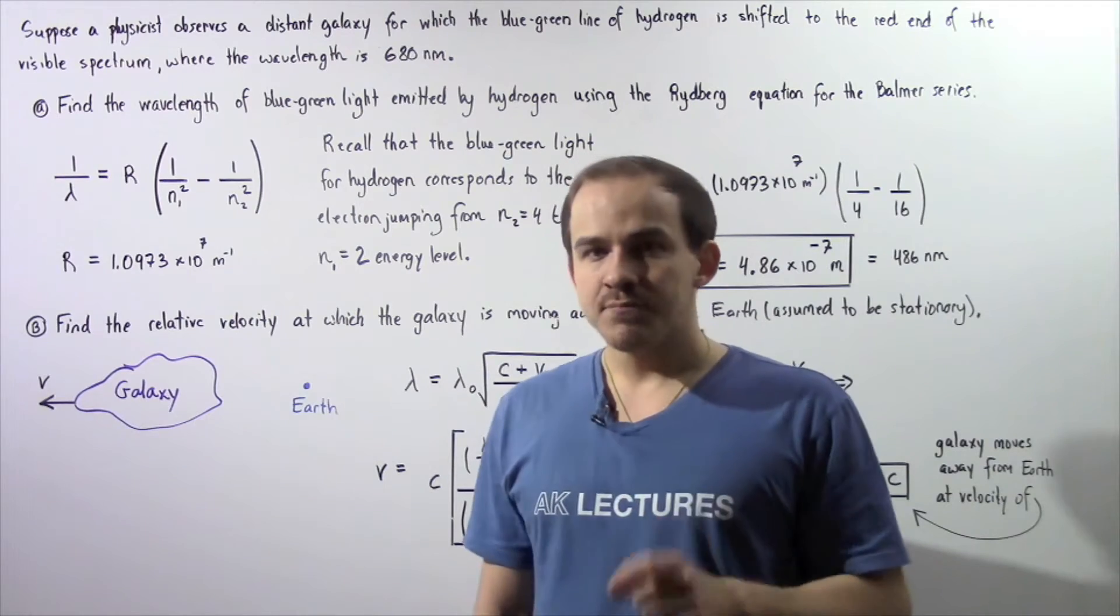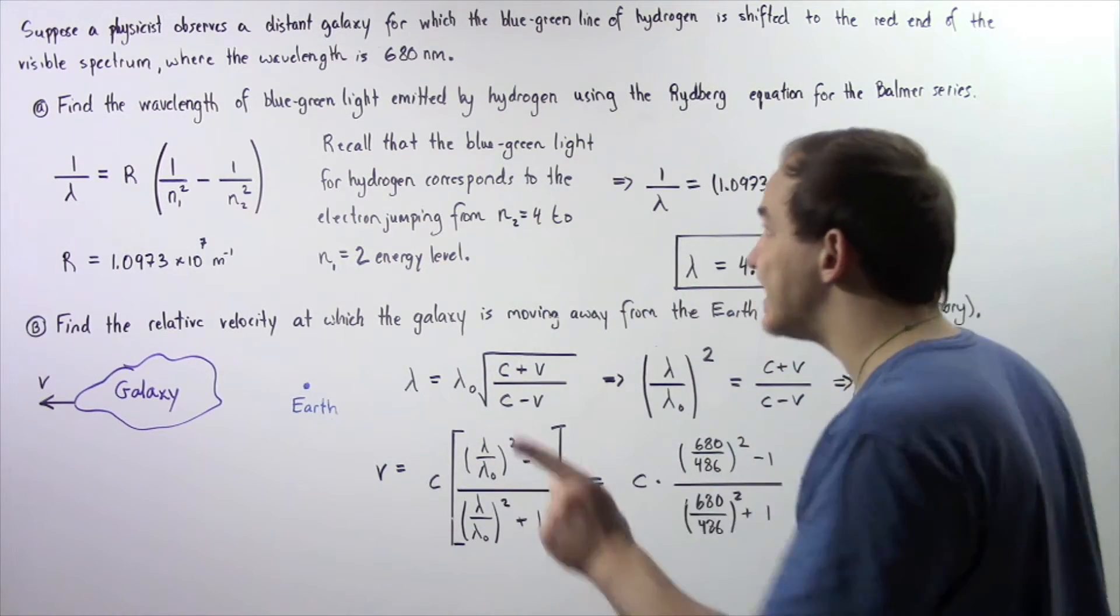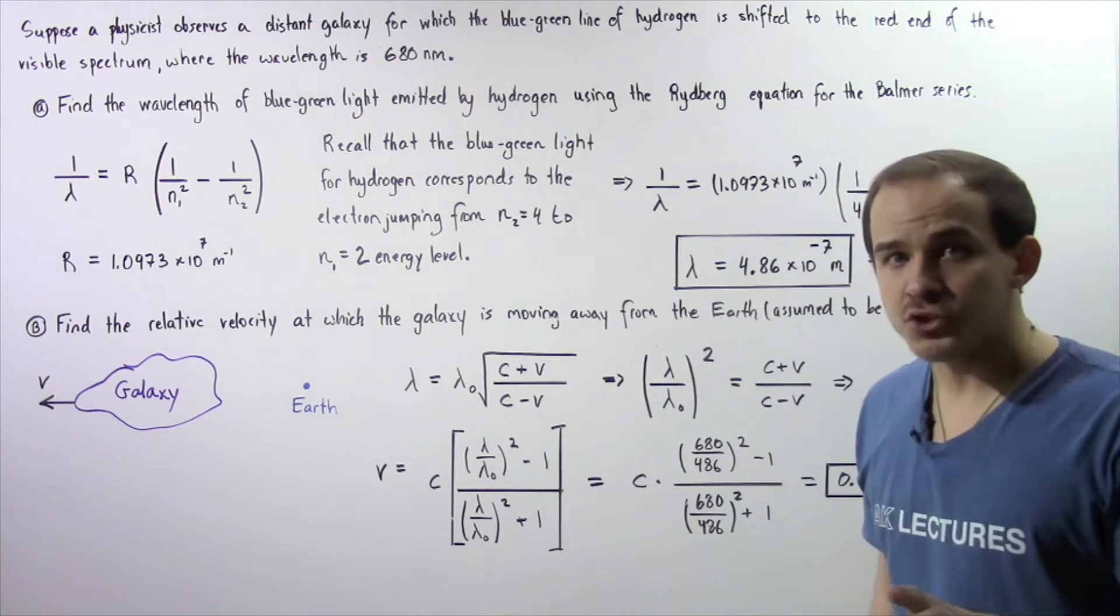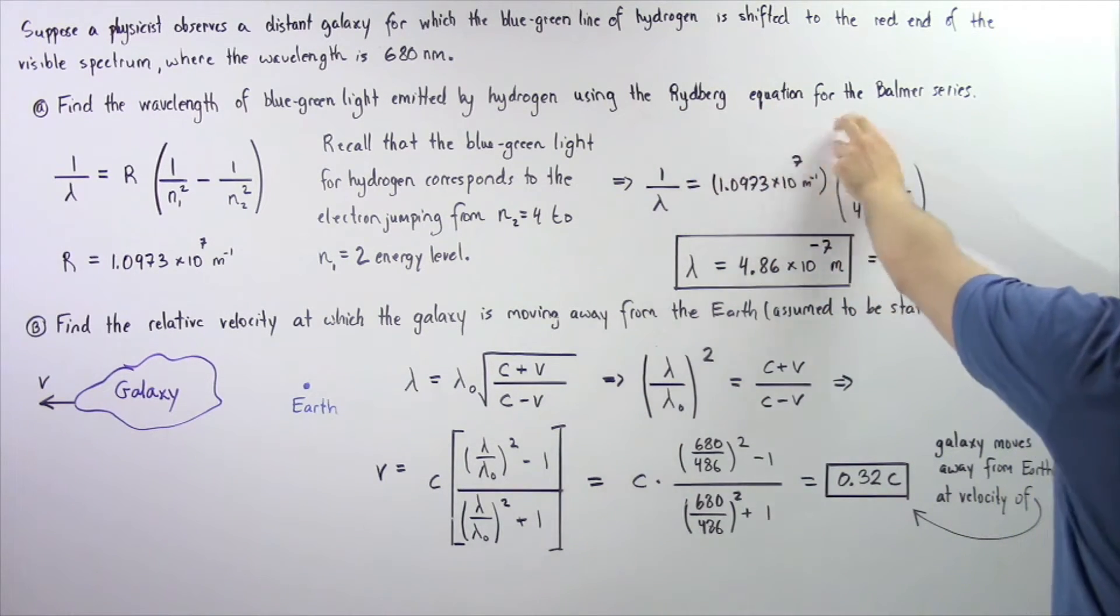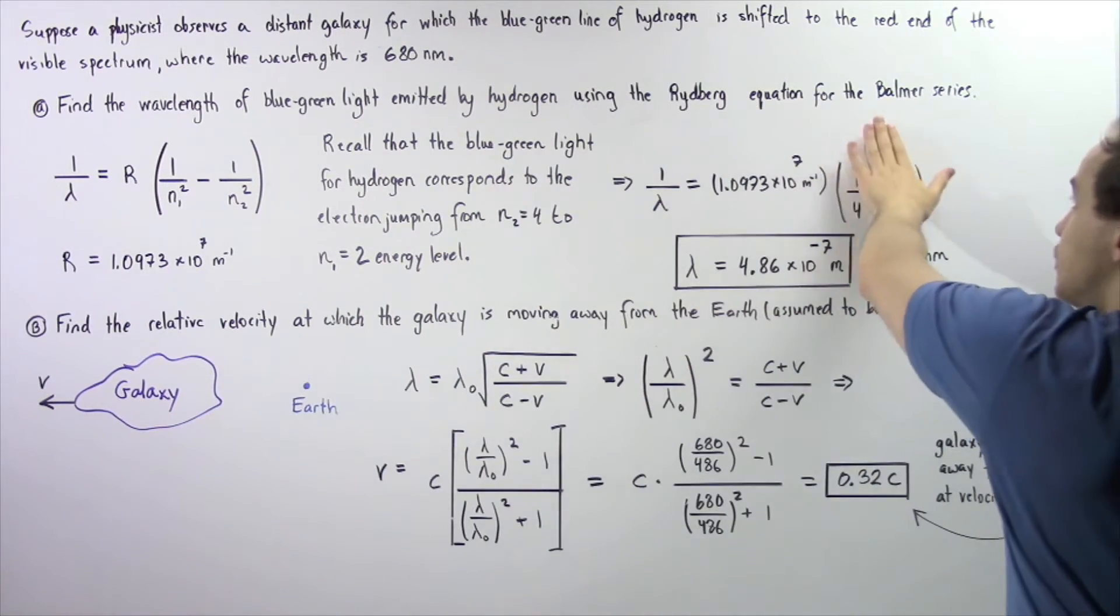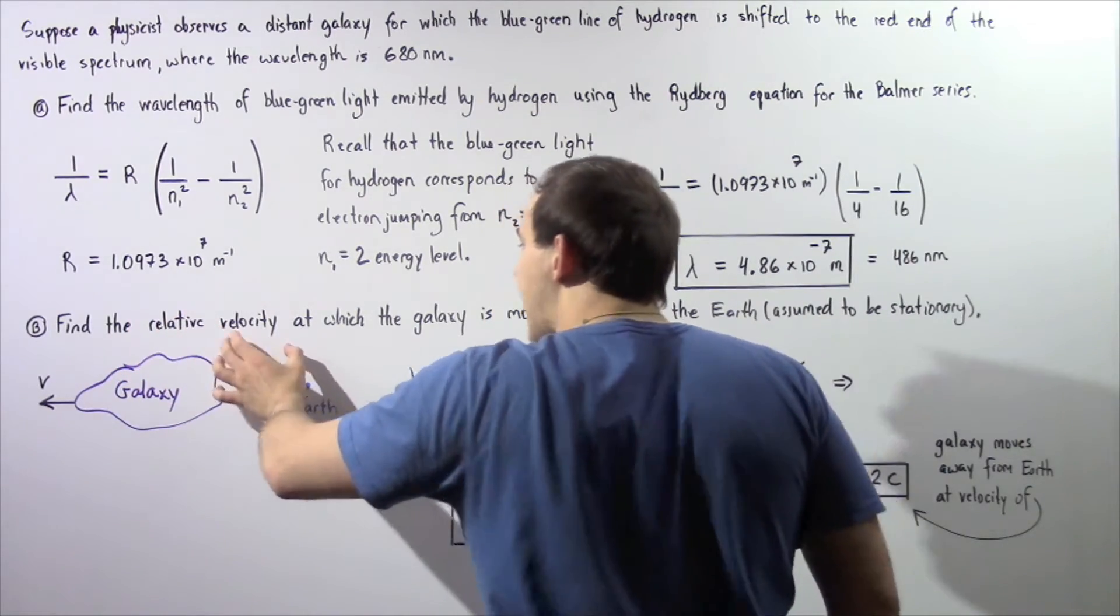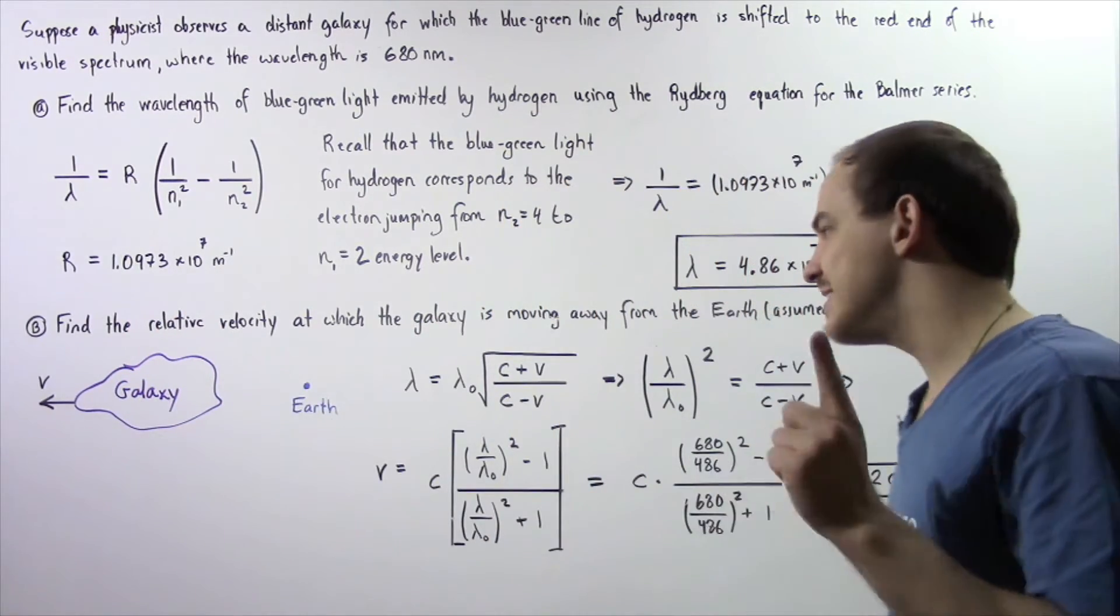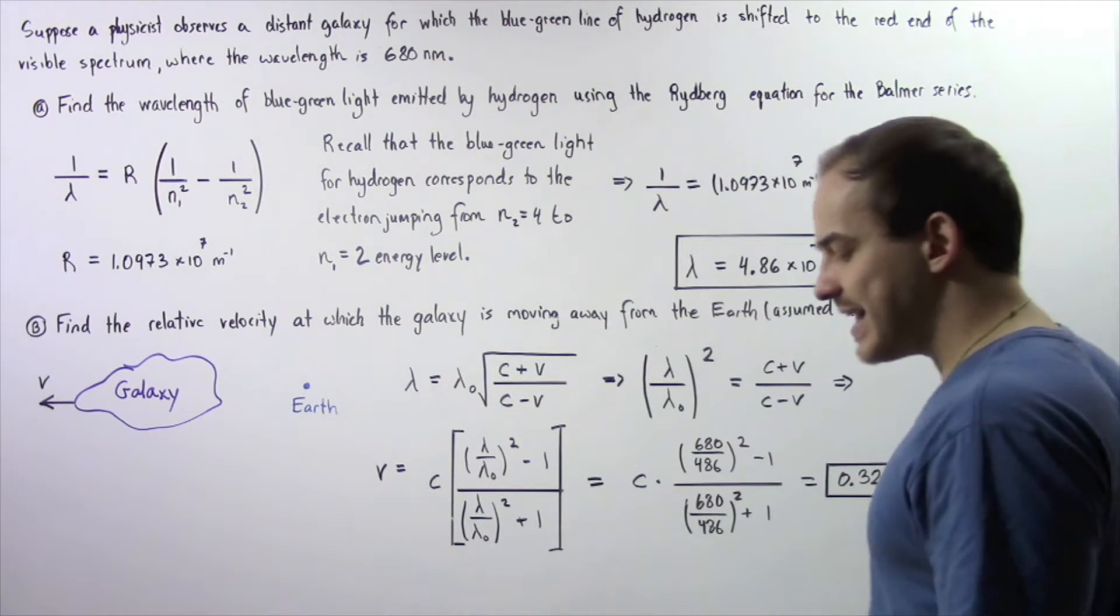In part A, we want to find the wavelength of blue-green light emitted by hydrogen on Earth using the Rydberg equation for the Balmer series. In part B, we want to use the result from part A to find the relative velocity at which the galaxy is moving away from the Earth, which is assumed to be stationary.